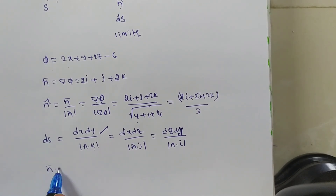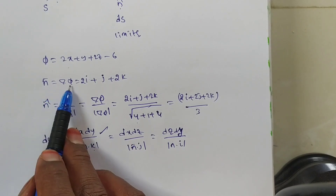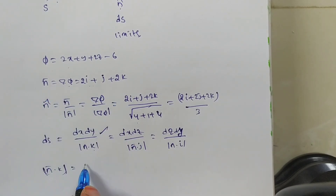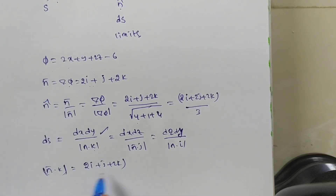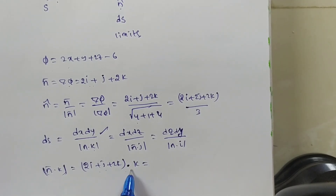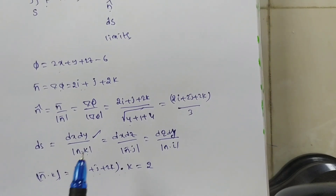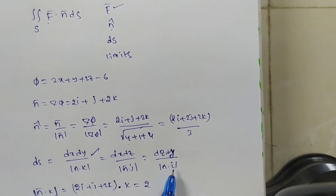Now n̄·k: we have (2i + j + 2k)·k. Since i·k = 0, j·k = 0, and k·k = 1, you will have |n̄·k| = 2/3. So this value is clear.